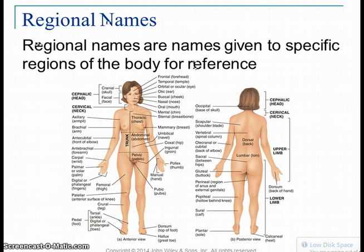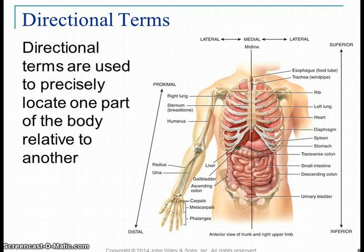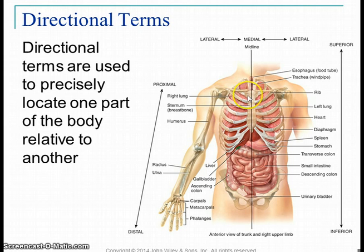Regional names — different parts of the body have different names. We'll get more into this in lab, but it'll be very helpful to start learning the names of different body parts, especially once we get into bones and muscles. Directional terms are the terms we use to relate different parts of the body to each other. Superior means above, towards the head. Inferior means below, towards the feet. Medial means towards the middle; lateral is more towards the side. The sternum is medial, the shoulders are lateral, and the ribs in between would be intermediate.